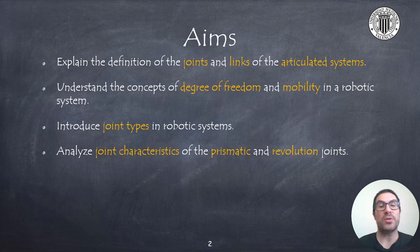The aims of the presentation are, on the one hand, to formally define the joints and links of an articulated system. In addition to this, I will explain the concepts associated with such systems, such as the degree of freedom and the degree of mobility. Later, I will explain the most common joint types in robotic systems and analyze the main characteristics, in particular the ones related to prismatic and revolute joints.